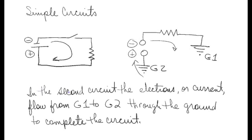And as it says here, in the second circuit, the electrons, or current, flow from ground 1 to ground 2 through the ground, or the earth, to complete the circuit. And obviously, this is where the term ground comes from because the electrons or current flow actually through the ground or through the earth.